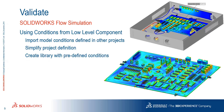We can take those flow conditions and pull them into the larger-level study as we expand analysis to the full control unit. These studies are linked — if we change any conditions in the component, those can be updated into the larger assembly flow simulation. You're also able to set up a design library of common components with their flow simulation conditions built in, saving a lot of time and allowing reuse of that data over and over again.